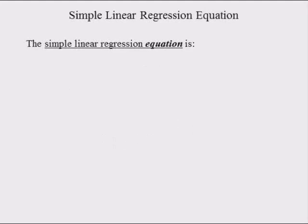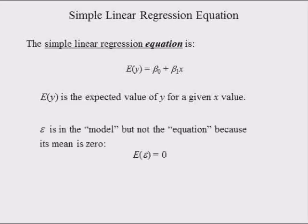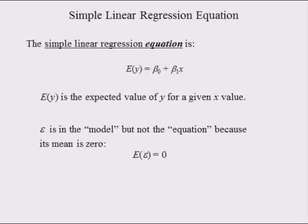The simple linear regression equation is a conditional mean of y. Given the value of x, we expect y to be equal to beta 0 plus beta 1 times x. E(y) is the expected value of variable y for a given value of x. The error epsilon is in the model but not in the regression equation because its expected value is equal to 0.